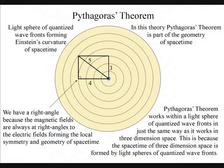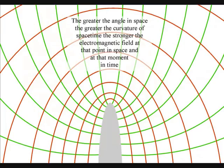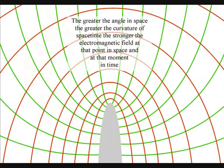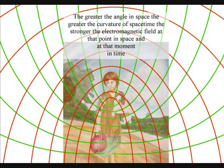The magnetic fields are always at right angles to the electric fields, forming the local spacetime symmetry and geometry. The greater the angle in space, the greater the curvature of spacetime, the stronger the electromagnetic field at that point in space, and at that moment in time.